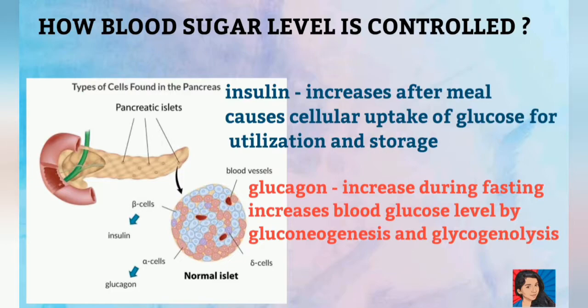Glucagon is produced during fasting. In the blood, glycogen breakdown and gluconeogenesis increase glucose levels. This keeps blood glucose levels within the normal range.